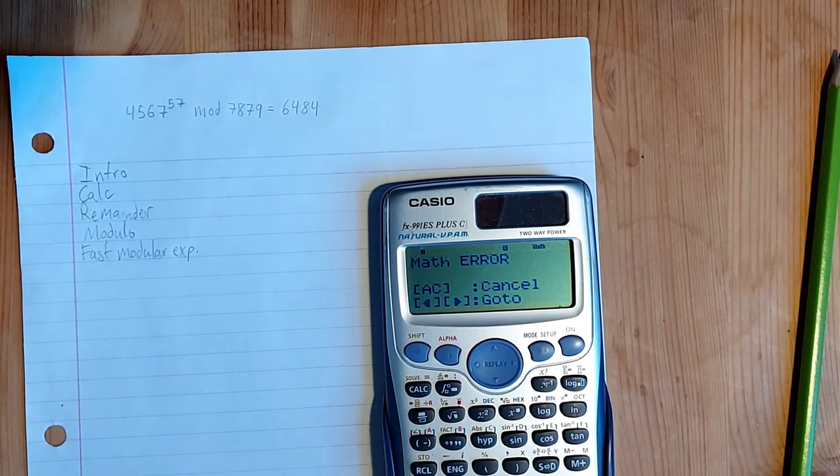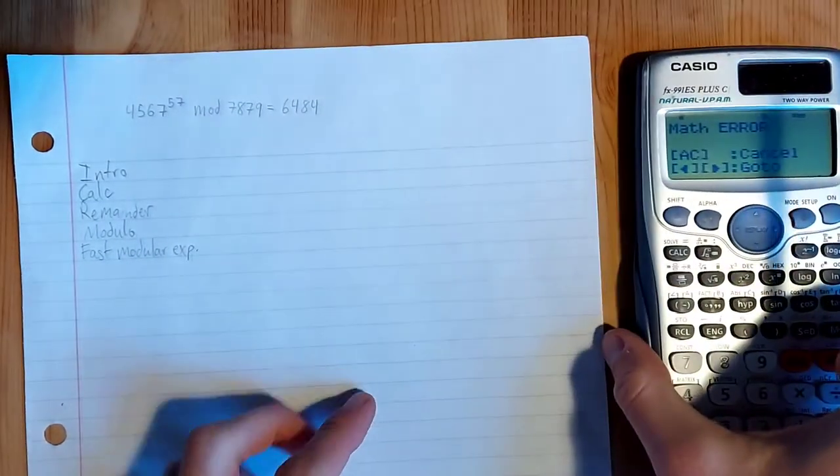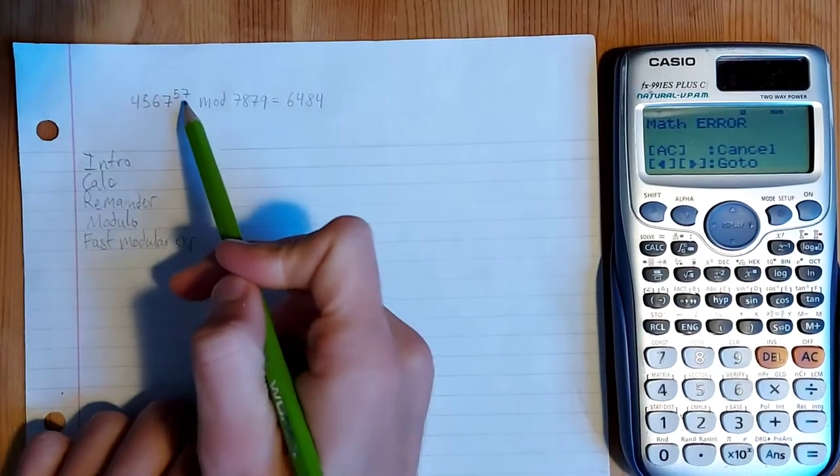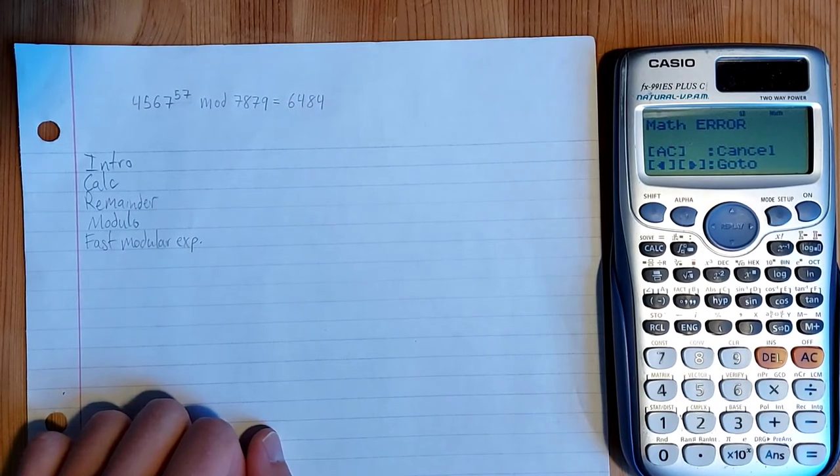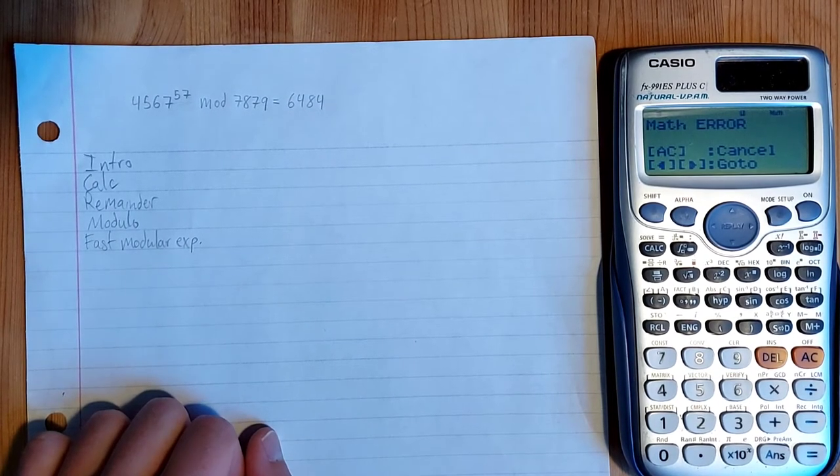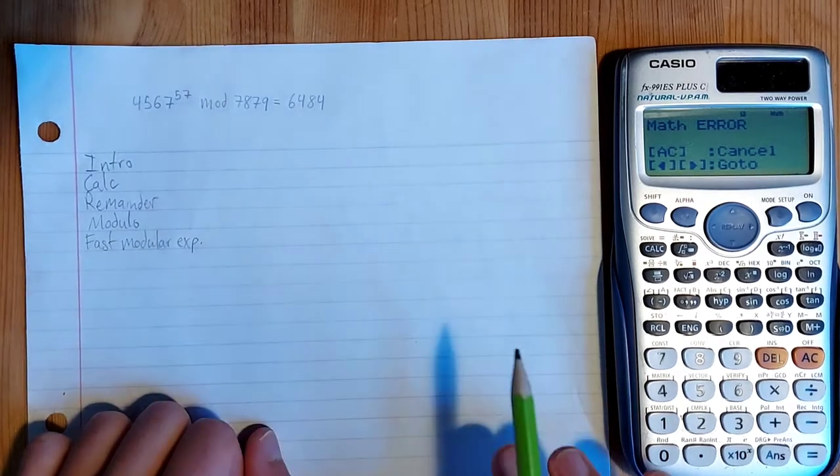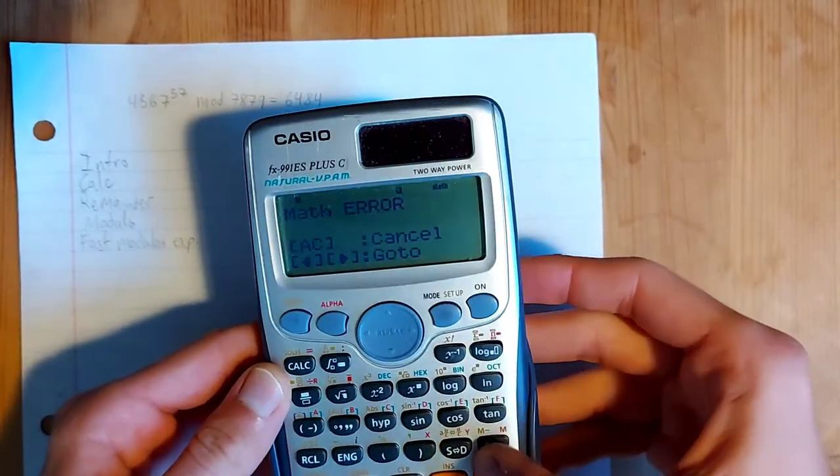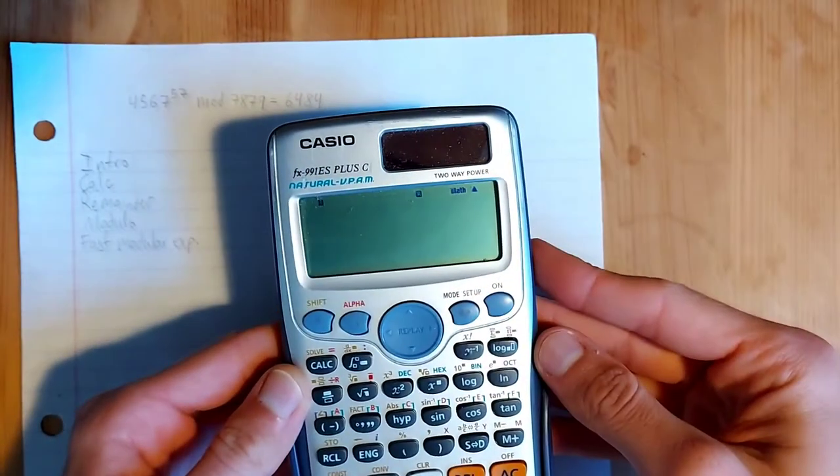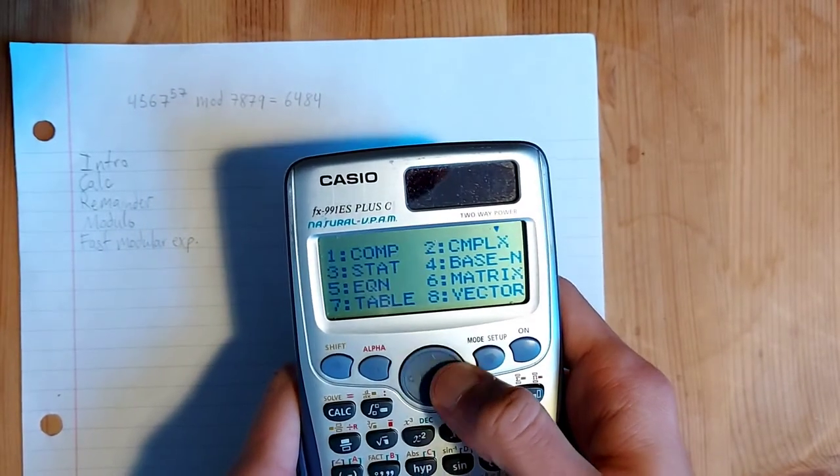You may have heard about it. I think it's like binary decomposition or something. But basically the concept is that if we can determine 57 as a binary string, we can use that to break up the exponentiation into smaller and easier to calculate parts. And so one way we can do that is, the easiest way to figure out what 57 in binary is, is to take your calculator, put it into base n mode by hitting mode and then four.